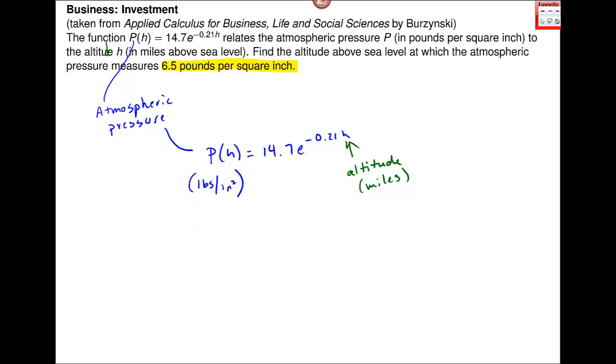Because I have this number, 6.5 pounds per square inch, and there's only one of these pieces that matches that unit. See, this one will match right here. So that tells me I need to put this 6.5 in for P(h). So I'm going to put that in right there and set it equal to this.